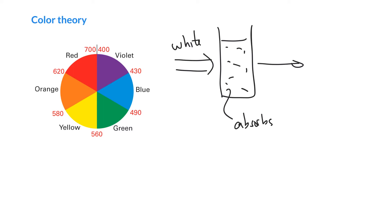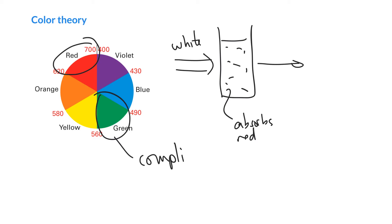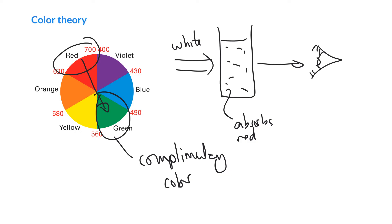If it absorbs red wavelengths — red wavelengths are sort of in the 620 to 700 nm region — what we will actually see is the complementary color. On this color wheel, the color directly opposite is called the complementary color, and our eyes and brain would translate this into green light.